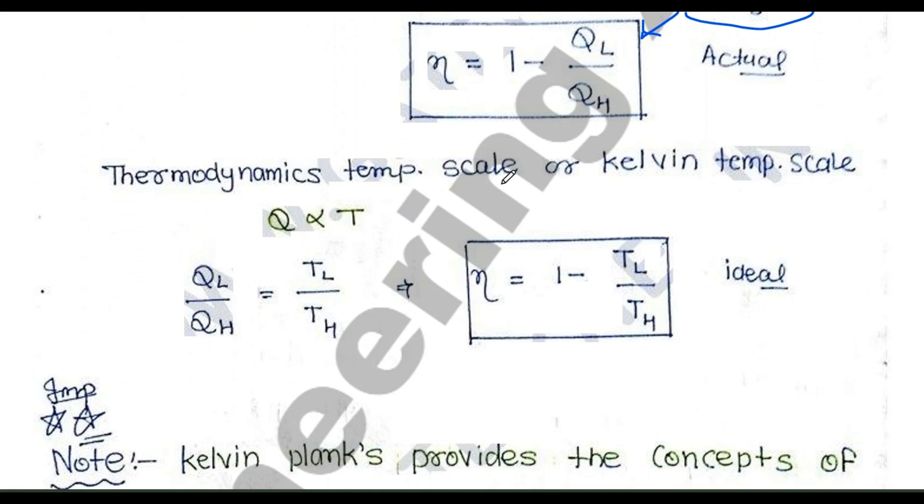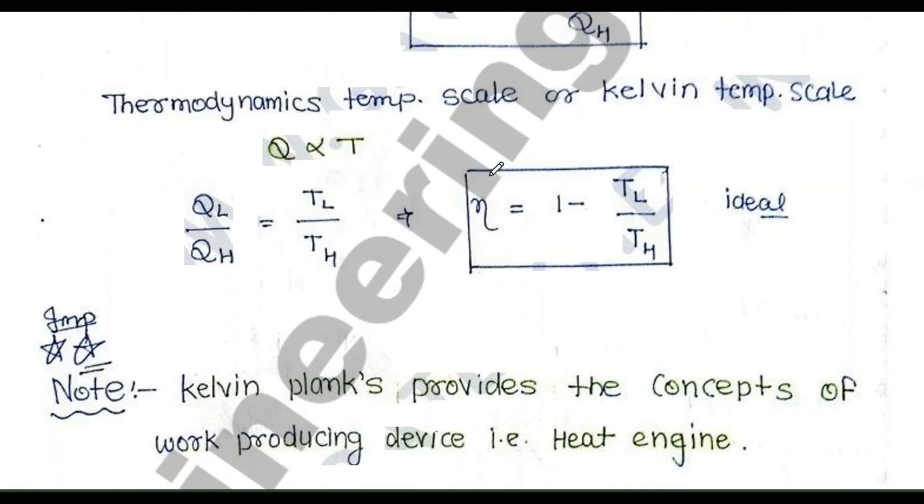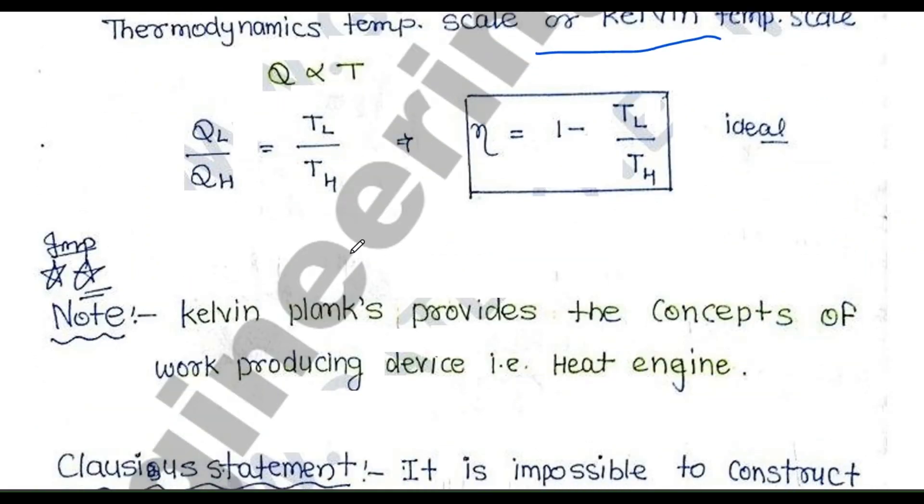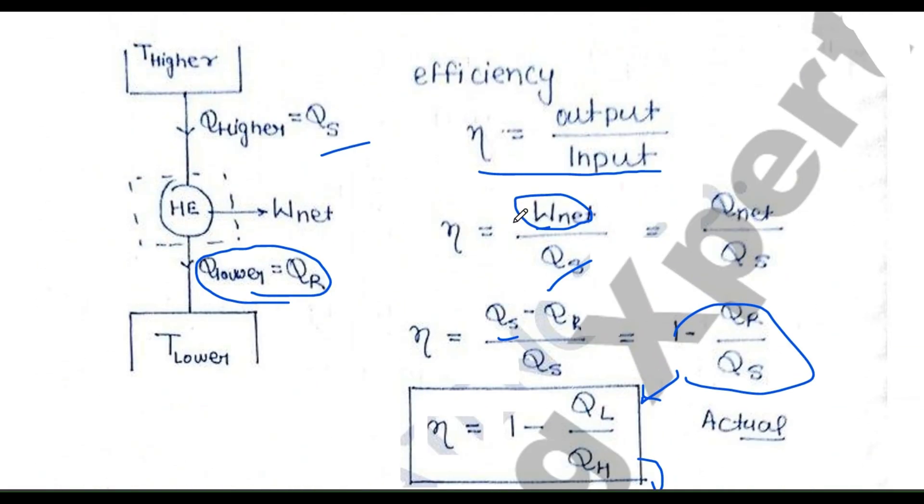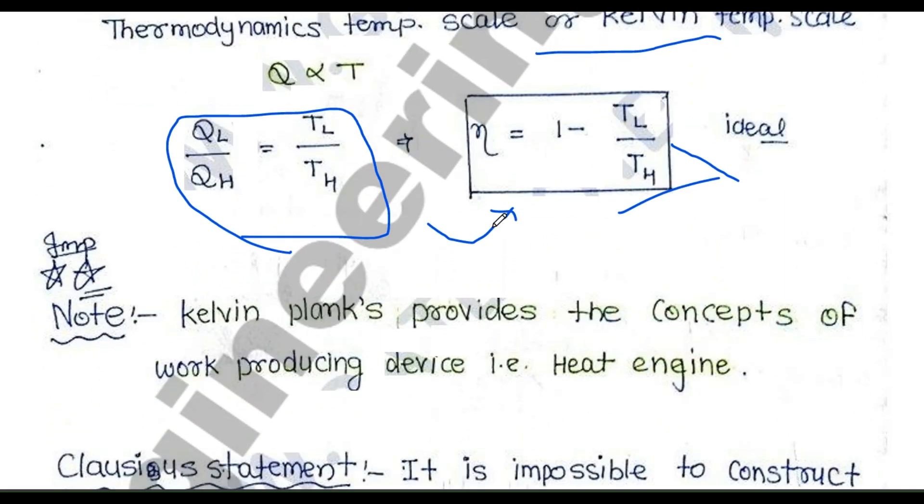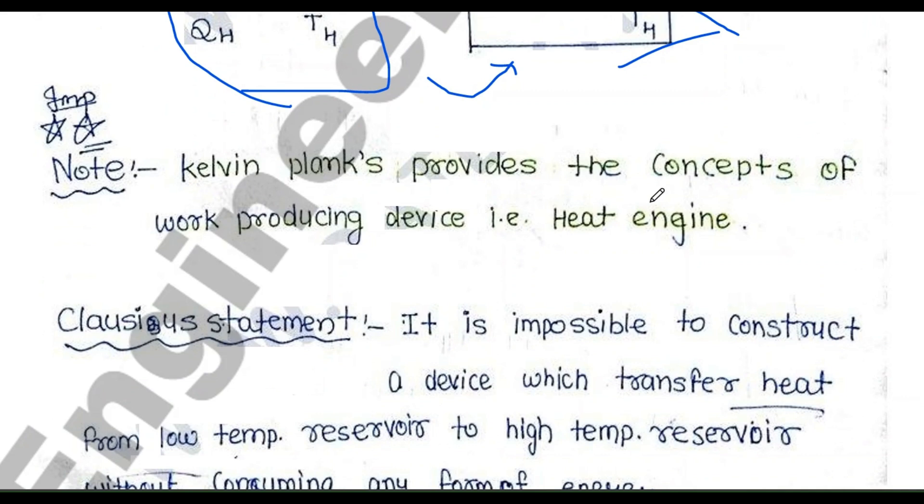This is the thermodynamics temperature scale or Kelvin temperature scale. Here it's important to use temperature in Kelvin, not in degree Celsius. This relation is often used to find the efficiency of an engine working over higher and lower temperature reservoirs. This scenario is when the process is reversible.